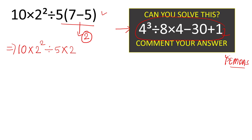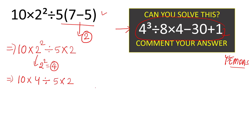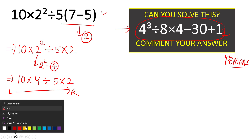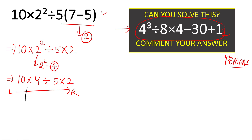Next, preference is given to the exponent. The exponent value is 2 squared, which equals 4. So we rewrite the question as: 10 times 4, divided by 5, times 2. Now we can see all operations are multiplication and division, which have the same priority, so we go left to right.